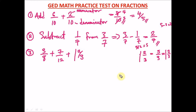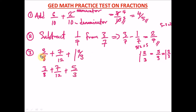So now we have 3 over 8 plus 7 over 12 plus 5 over 3. We can't just add these because they have different denominators. We have to find the least common multiple of 8, 12, and 3.